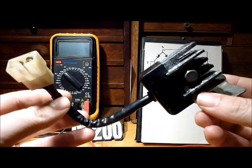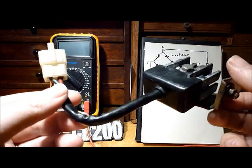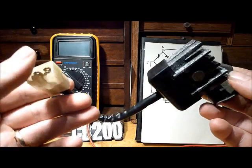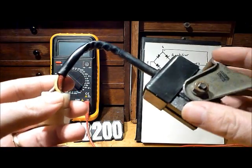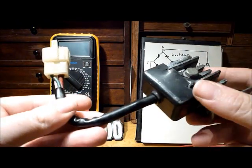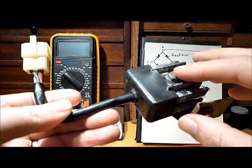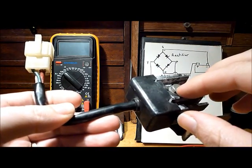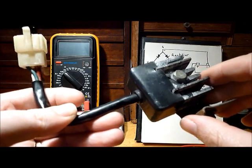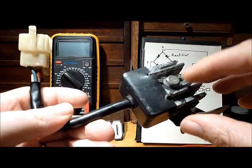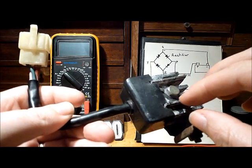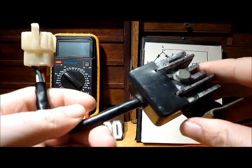In this short video we're going to take a look at the rectifier of a Honda CB200, a 1970s bike. This unit converts the AC power coming from the generator or stator into DC or direct current for charging the battery and powering the systems.